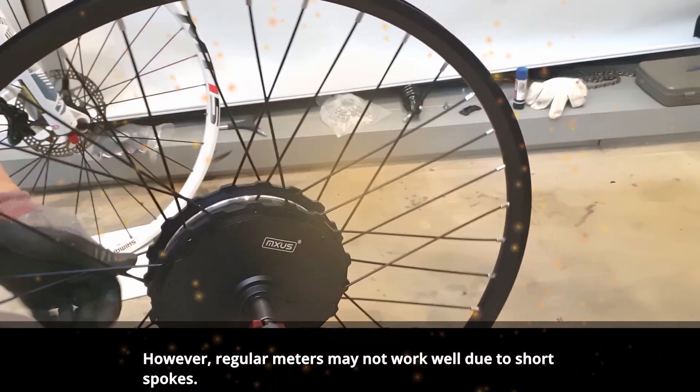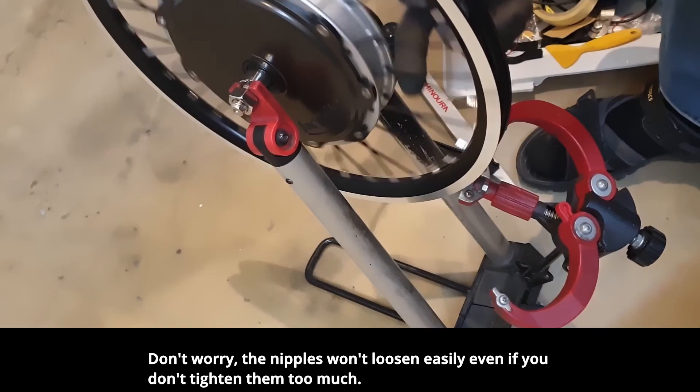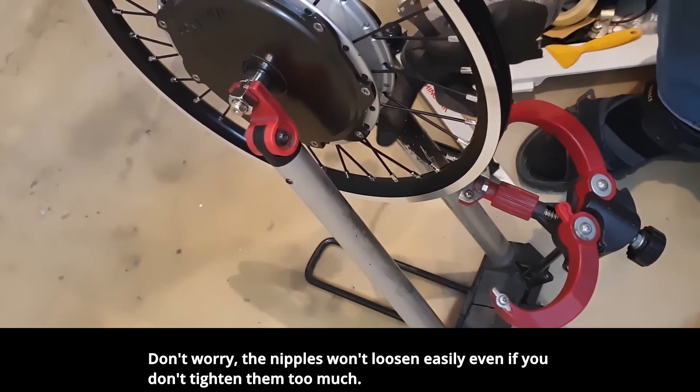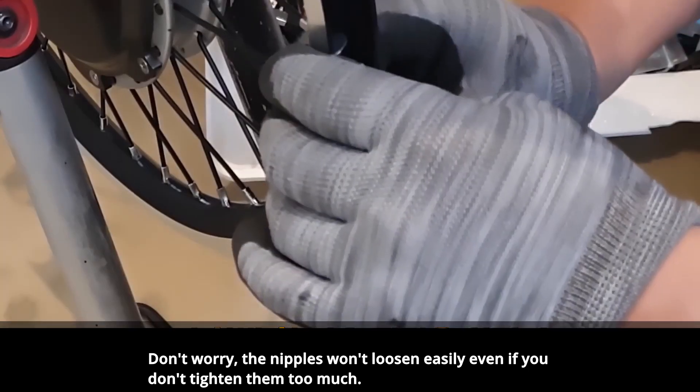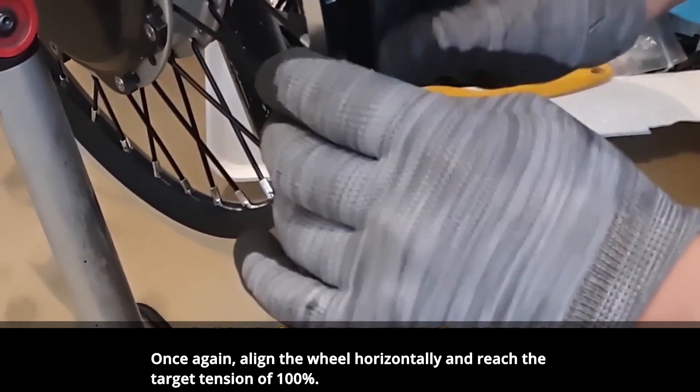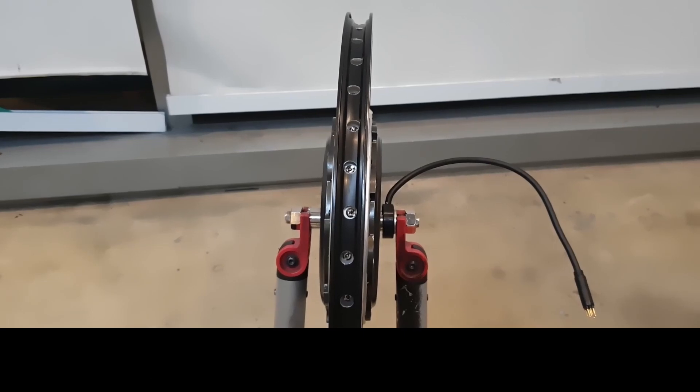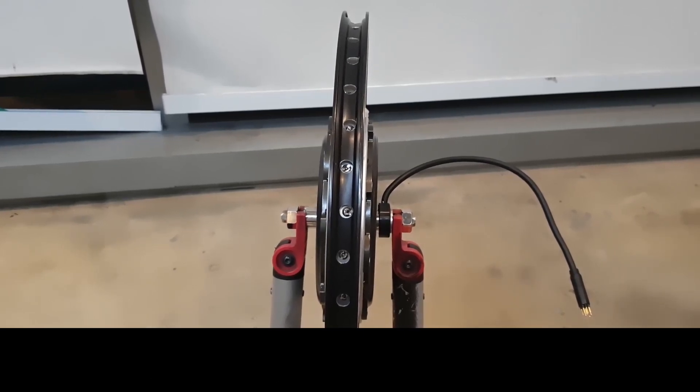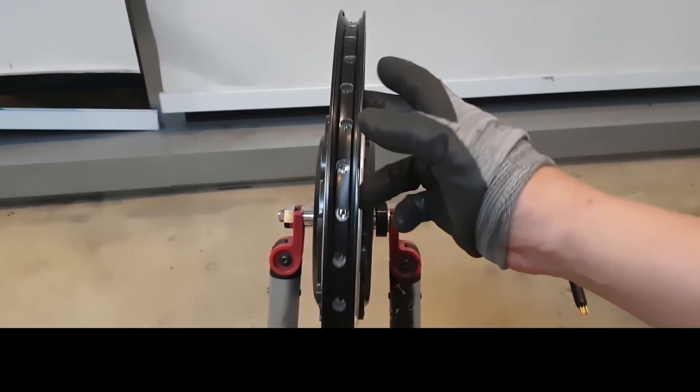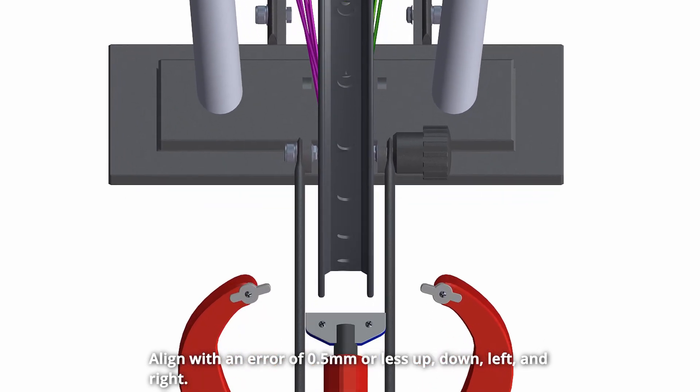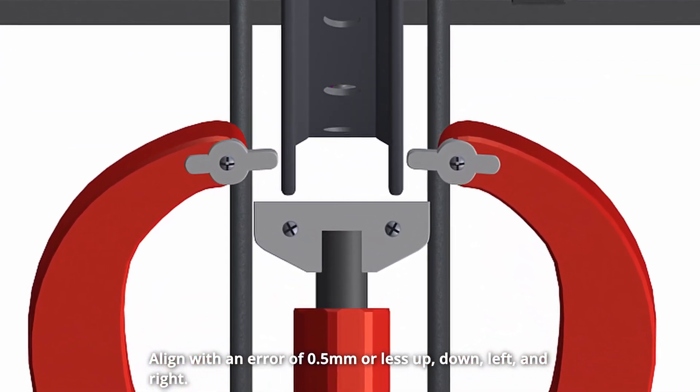However, regular meters may not work well due to short spokes. Don't worry, the nipples won't loosen easily even if you don't tighten them too much. Once again, align the wheel horizontally and reach the target tension of 100%. Align with an error of 0.5mm or less up, down, left, and right.